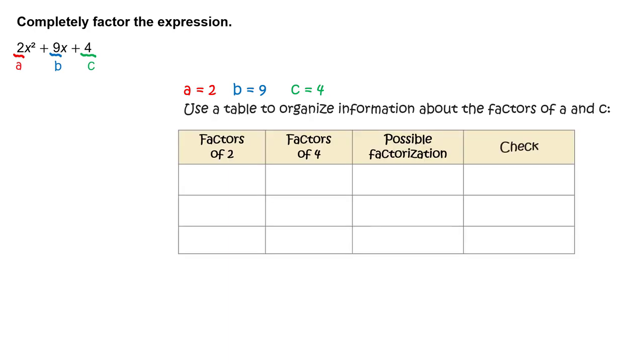Use a table to organize information about the factors of a and c. Make a list of possible factors of 2, then make a list of possible factors of 4. For each combination of possible factors, write out the possible factorizations.